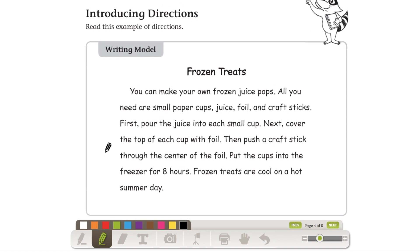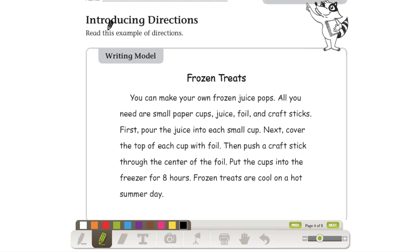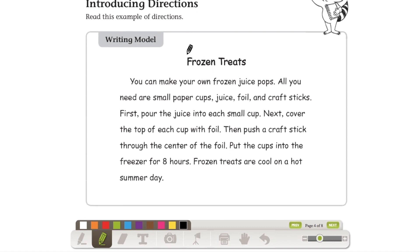Okay, so today we're doing a worksheet on writing directions. It says introducing directions and read this example of directions. So we're going to read it together. Frozen treats. You can make your own frozen juice pops. All you need are small paper cups, juice, foil, and craft sticks.